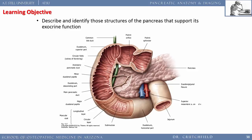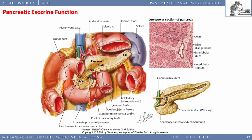The common channel theory explains gallstone pancreatitis. Some papers argue it's not caused by a stone blocking both ducts, but in my experience that's always been the case. There may be other pathophysiologic processes but they're not well understood. From Netter's Atlas: tail, body, neck, superior mesenteric artery and vein, retroperitoneal duodenum, and the endocrine islet cells — alpha, beta, and delta cells secreting glucagon, insulin, and somatostatin.